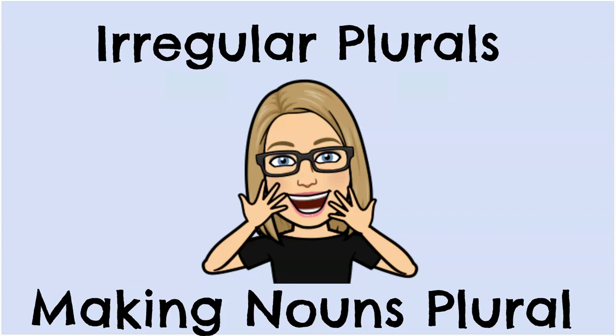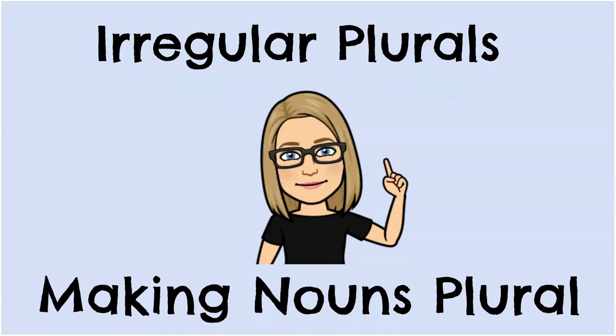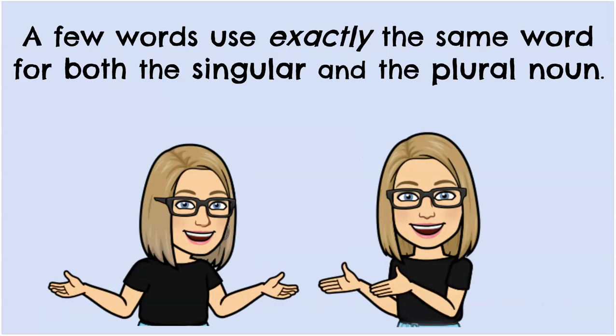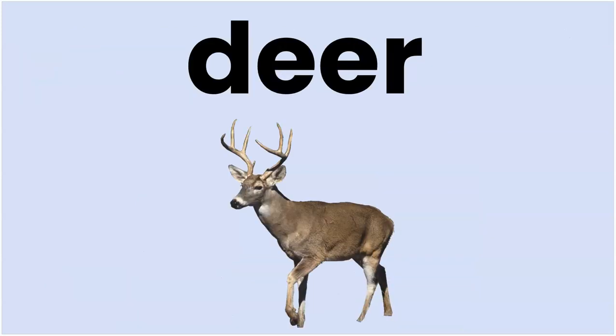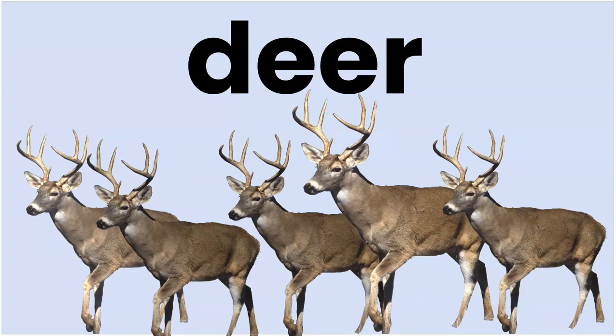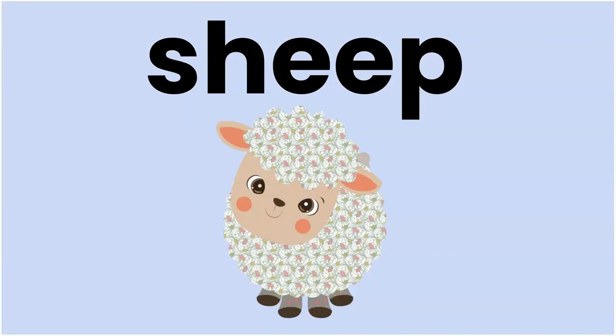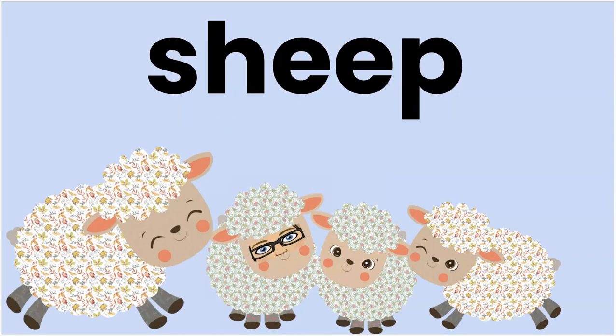There are several irregular plural nouns, and now that you know about it, you'll start to notice them when you read, write, and speak. There is one more way we write irregular plural nouns: a few words use exactly the same word for both the singular and the plural noun. For example, you would say one deer or six deer. One sheep for singular — sheep is also plural, like four sheep. Crazy!